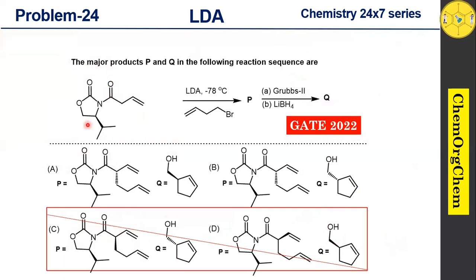Based on our analysis — considering the role of LDA in deprotonation, the use of Evans chiral auxiliary for diastereoselective alkylation, the application of ring closing metathesis, reduction by lithium borohydride, and RS nomenclature — we can deduce that the correct option is B. By breaking down the problem step by step and understanding each reaction condition, we have identified the correct product. If you enjoyed this video, please give it a thumbs up, share it with your friends, and subscribe to Chemistry 24/7 for more problem-solving sessions.